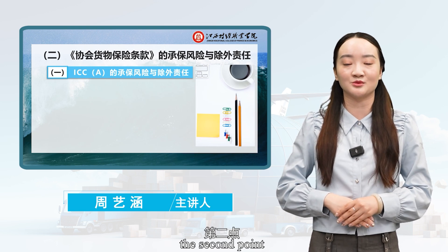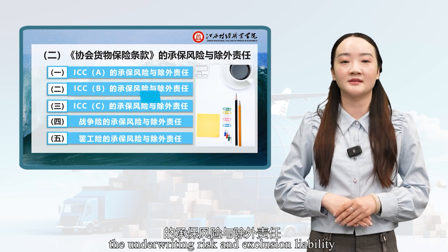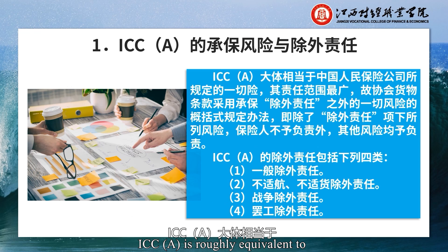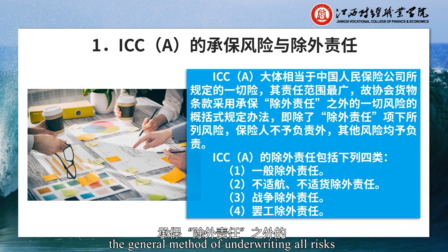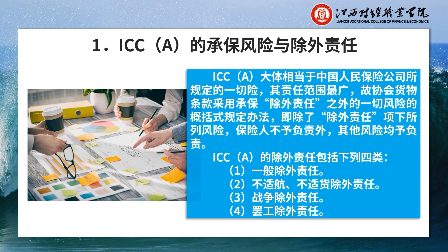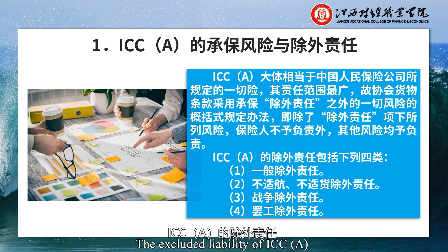Regarding the Association cargo insurance clause's underwriting risks and exclusion liabilities: ICC A is roughly equivalent to the People's Insurance Company of China's all-risks, with the broadest range of liability. Therefore, the Institute Cargo Clauses A adopts the general method of underwriting all risks except for exclusions — that is, except for the risks listed under exclusions, other risks are all covered by the insurer. The excluded liabilities of ICC A include four categories: first, general exclusion of liability; second, excluding liability for unseaworthy and unstable cargo; third, war exclusion liability; fourth, strikes exclusion liability.